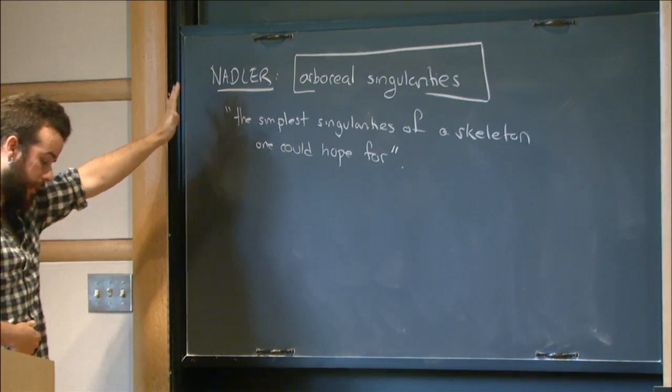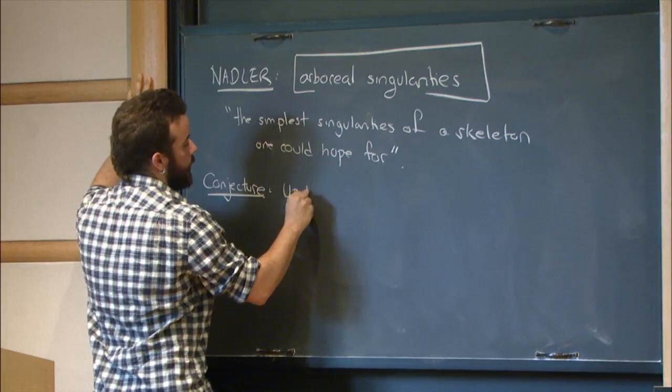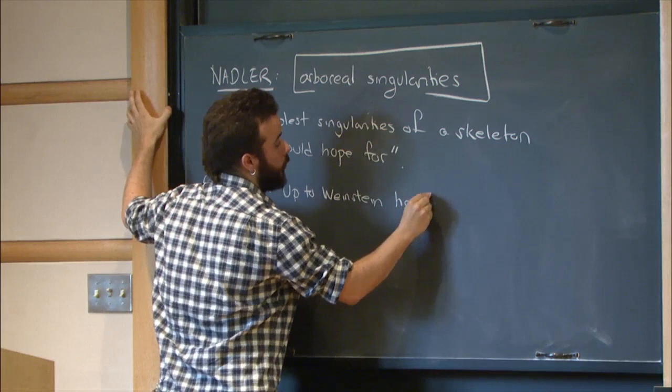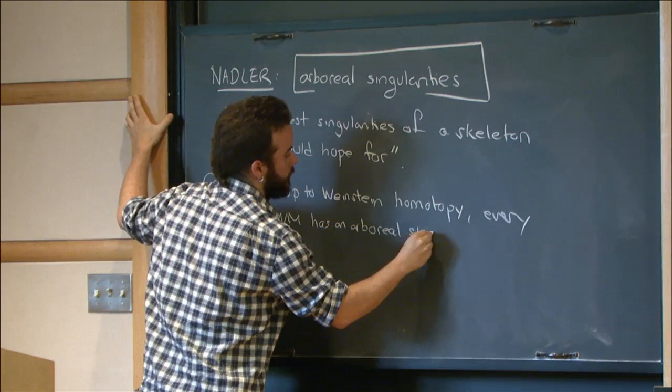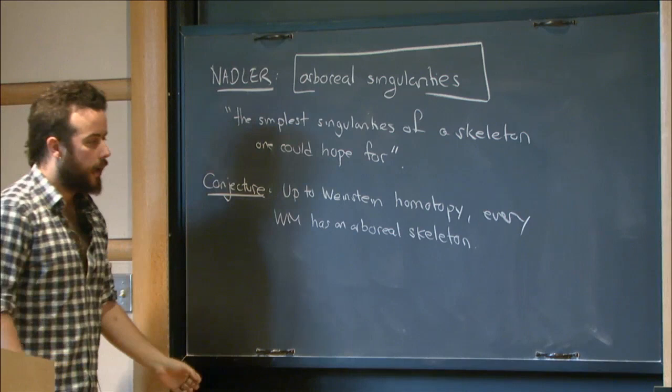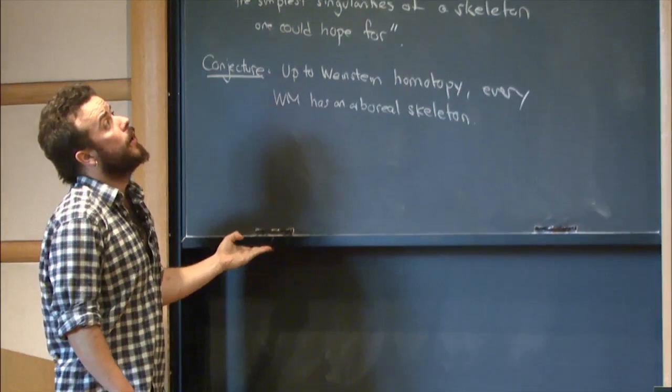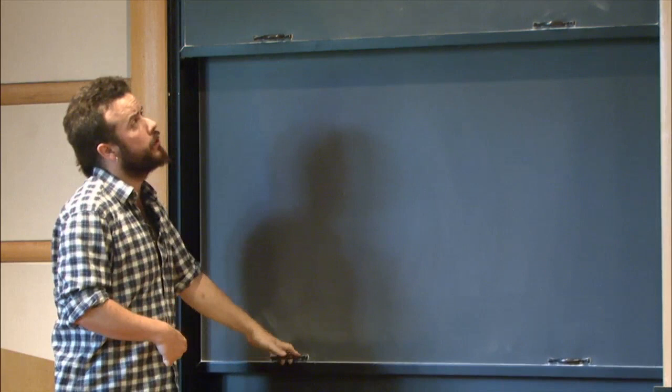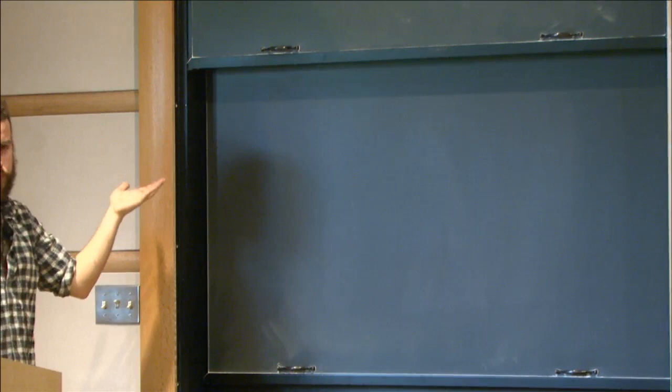He actually guessed this definition coming from a very different point of view. But the conjecture that he made was that up to Weinstein homotopy, so up to homotopy of Weinstein structures, every Weinstein manifold has an arboreal skeleton. So it has a skeleton whose singularities only live in this class. And there's other things that are nice about this class. For instance, the invariants that we care about can be computed locally for these singularities. And if this is coupled with the appropriate one-parametric version of this statement, then in some sense Weinstein manifold topology could be reduced to the smooth topology of arboreal stratified spaces.